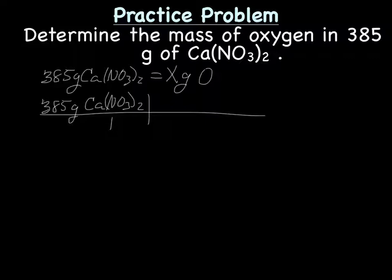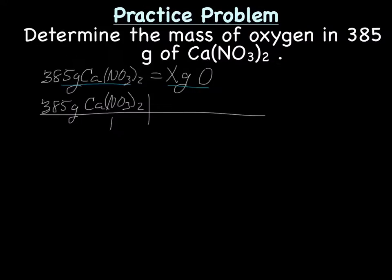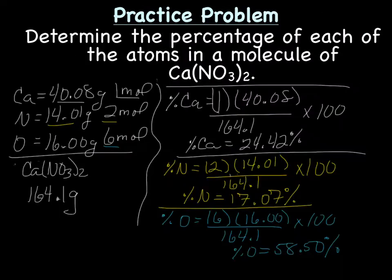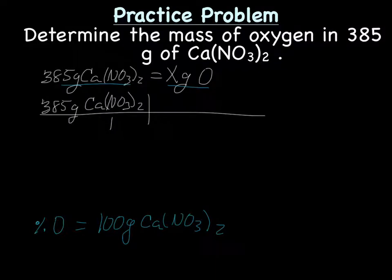Now, we're looking for an equality that has grams of a compound and grams of an atom. We have that equality. Percent mass of the element in grams equals 100 grams of the compound. So, what we're really looking for is percent mass of the element, in this case, percent of oxygen, equals 100 grams of Ca(NO3)2. And we just did this problem right here, and the percent mass of oxygen was 58.50%. And we're going to make that 58.50, drop the percent sign. So, equals 58.50 grams of oxygen.